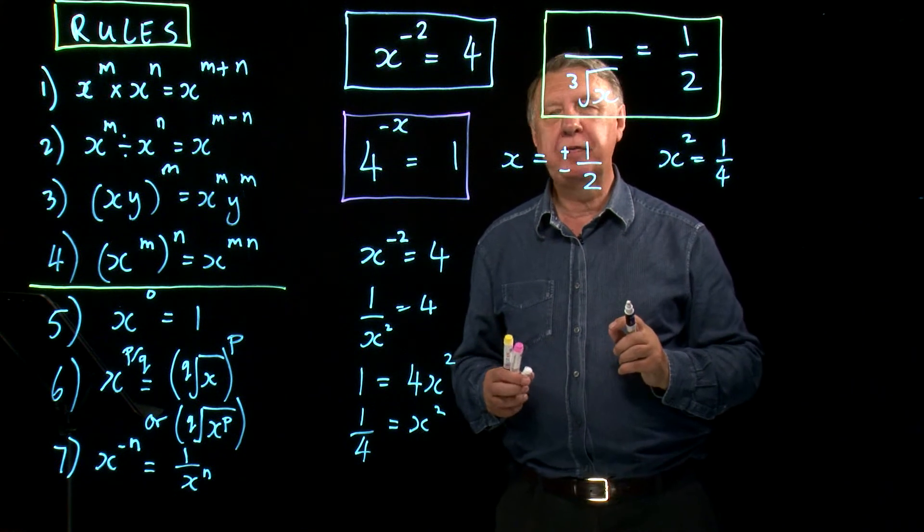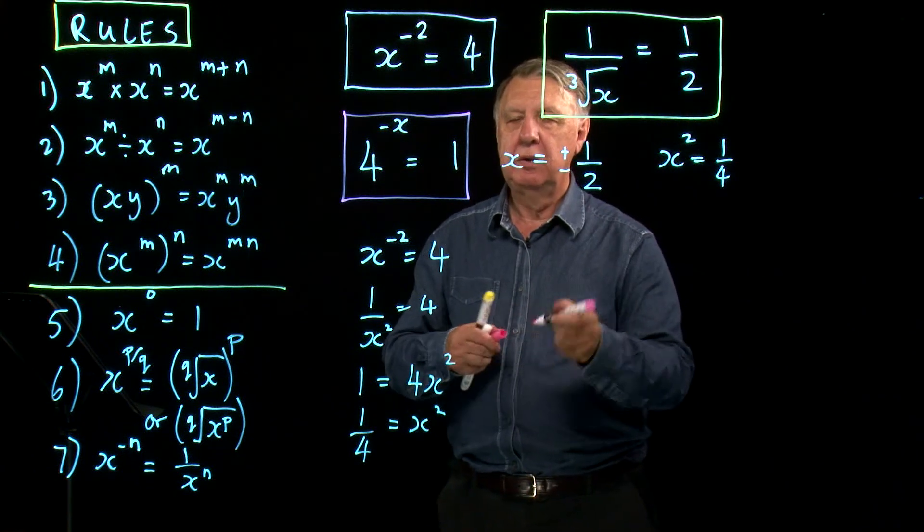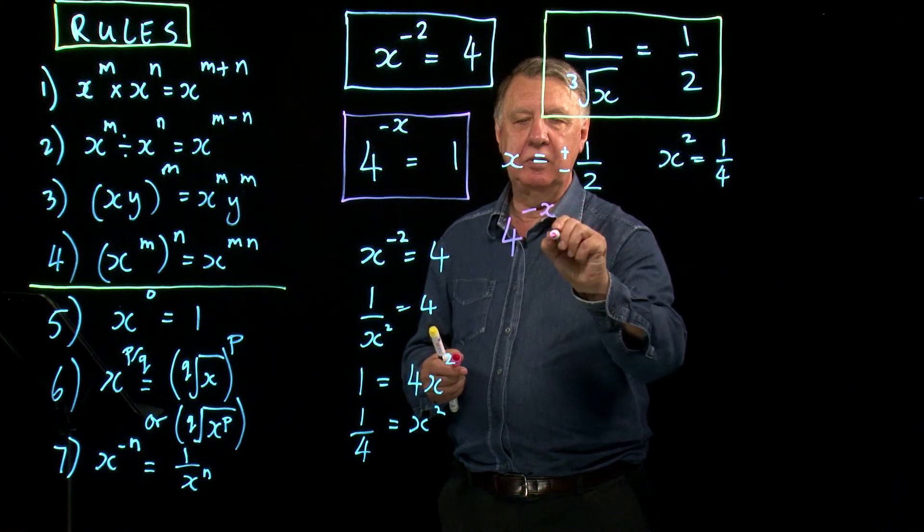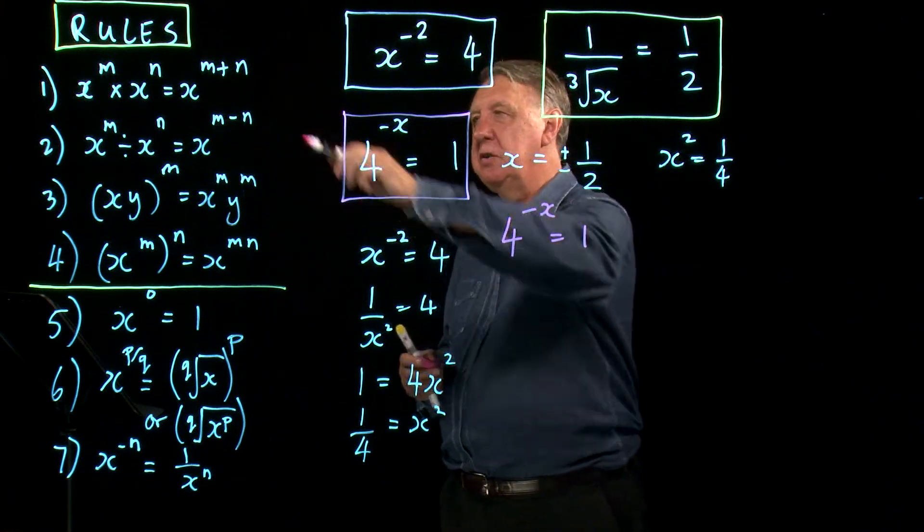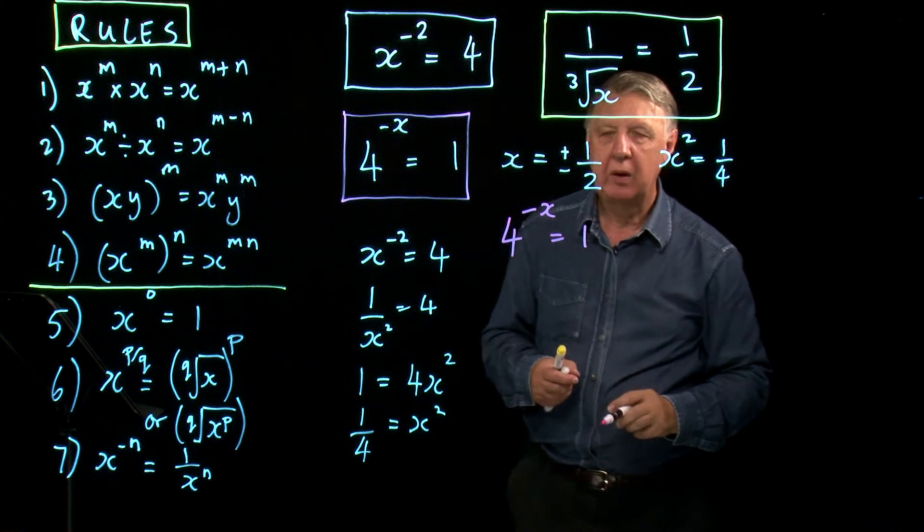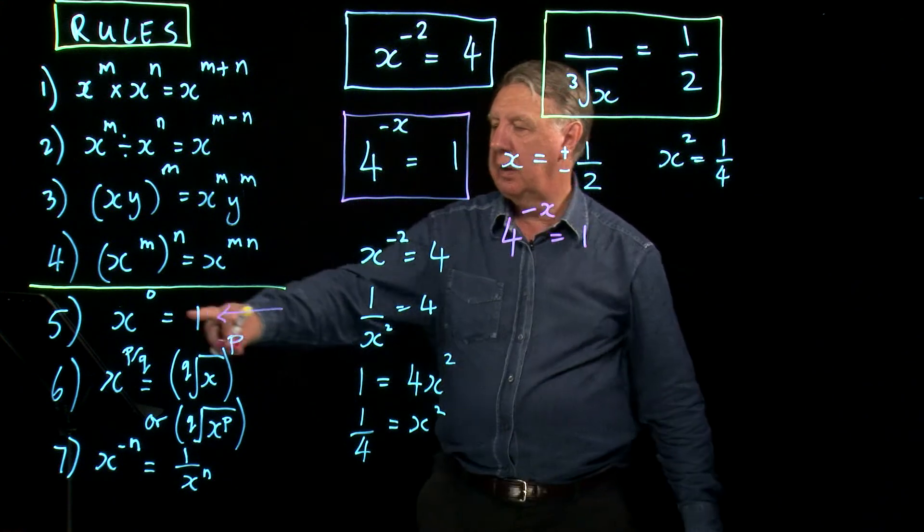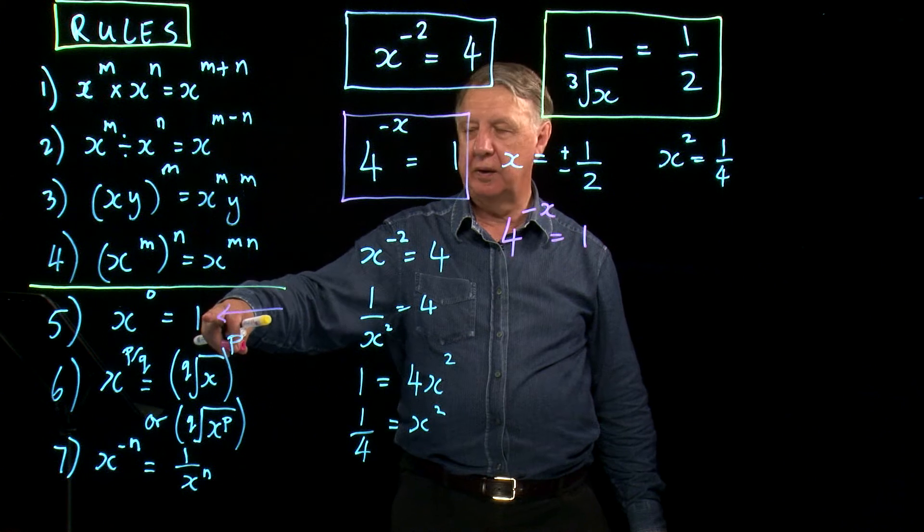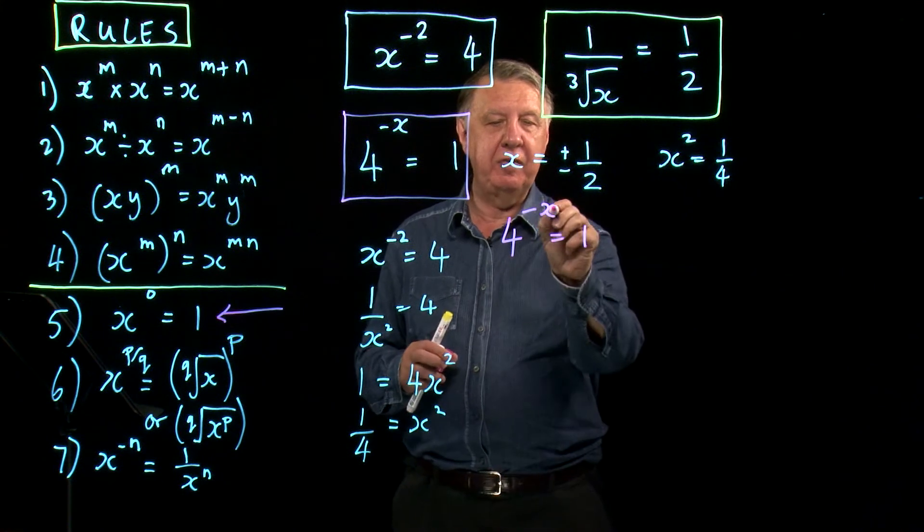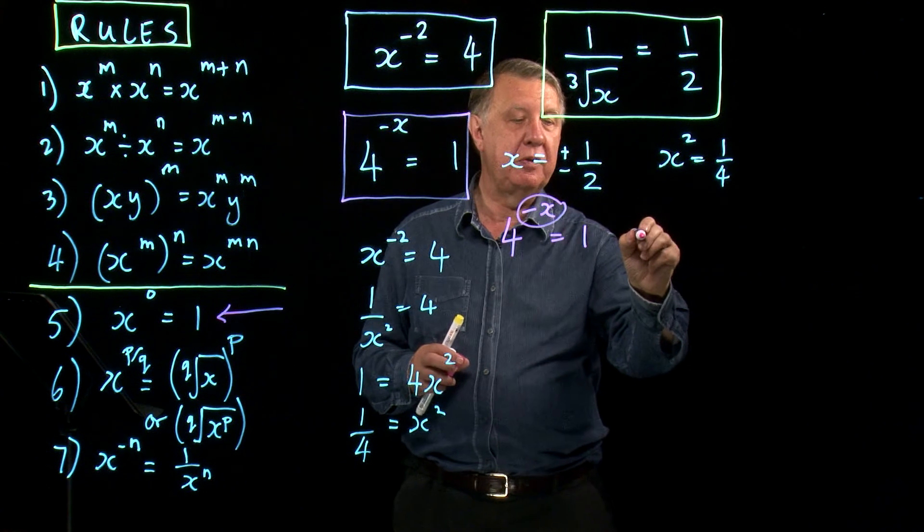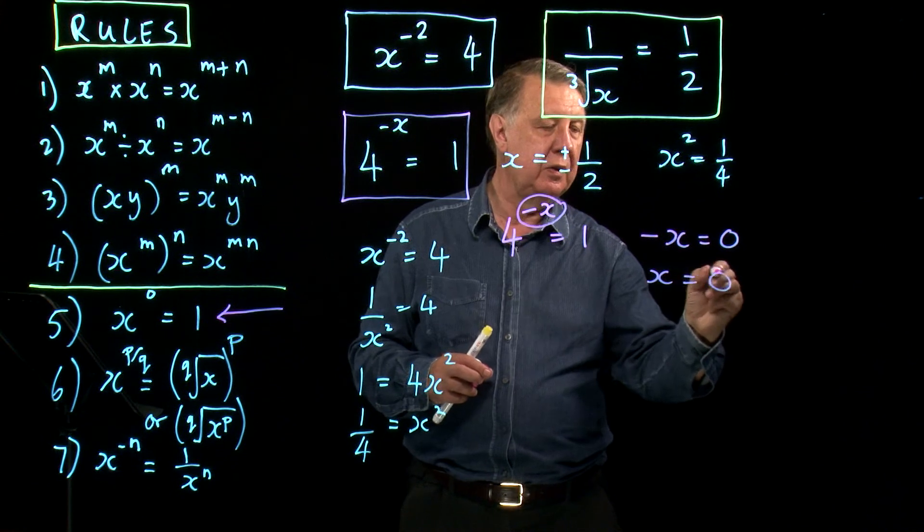Okay let's go for I think we'll have the pink equation. 4 to the negative x equals 1. Now we need to go to our list of rules again. Because one of them is the one we need. Anything to the power of 0 is 1. So here the only way that is possible is if the power is 0. So negative x equals 0 which is the same as saying x equals 0.